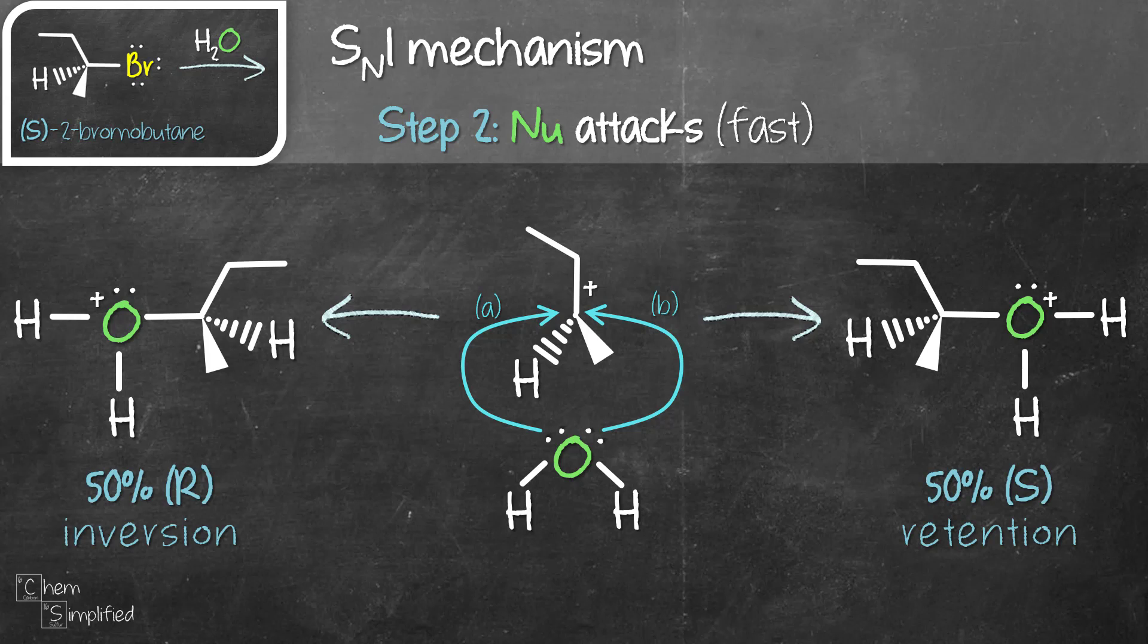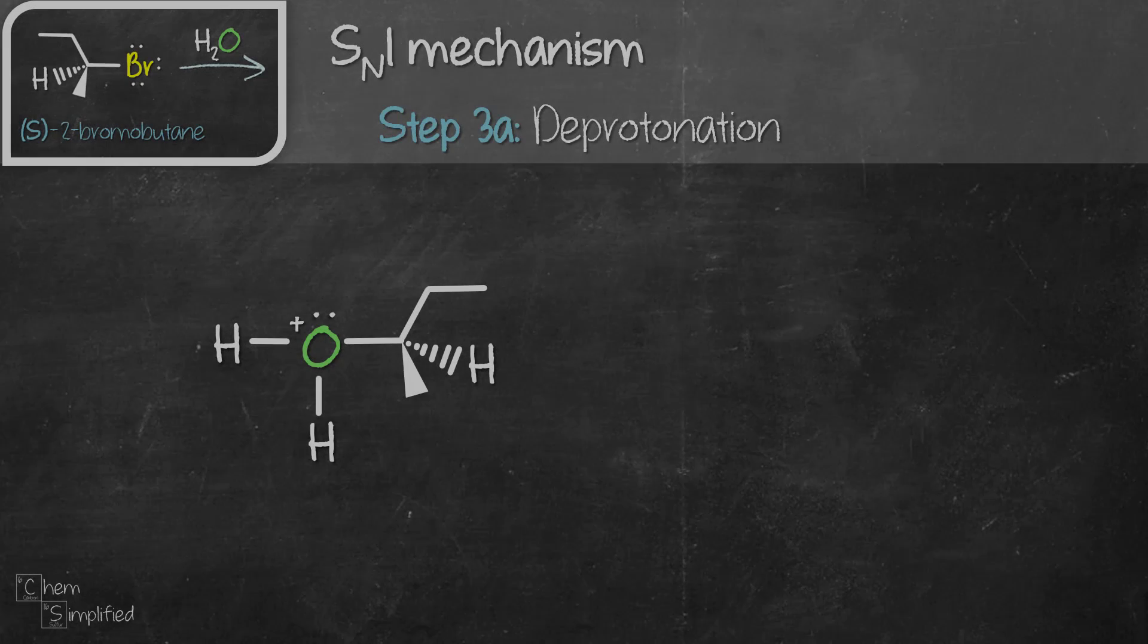The stereochemistry for both intermediates is different. The one on the left will have inversion at its chiral center, while the one on the right retains its stereochemistry. Each of these intermediates will need to go through one more step to remove that extra proton.